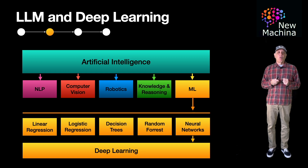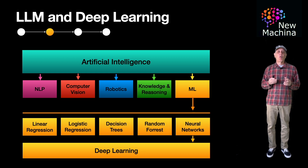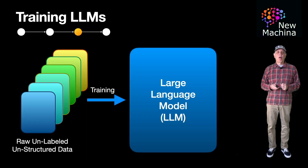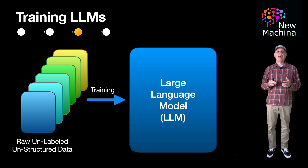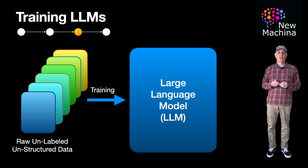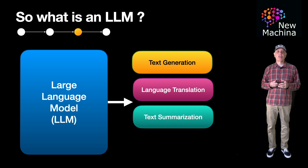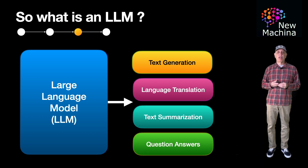Moving on, with this background of LLMs, NLP, and deep learning in place, what do LLMs actually do? LLMs are designed to understand and generate human-like text. They have been trained on vast amounts of text data, enabling them to understand context, grammar, and semantics. They can perform a variety of language-related tasks such as text generation, language translation, text summarization, and question and answering.